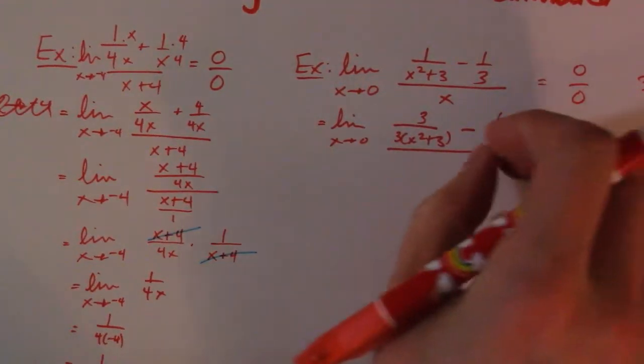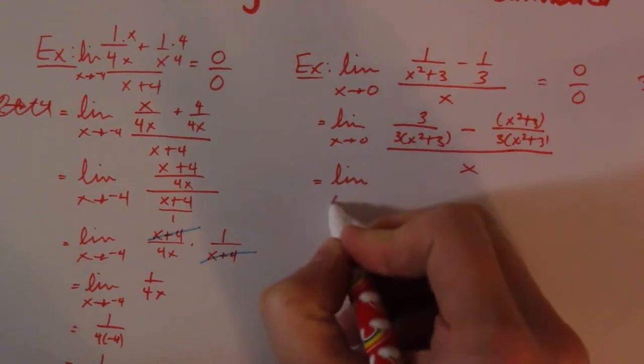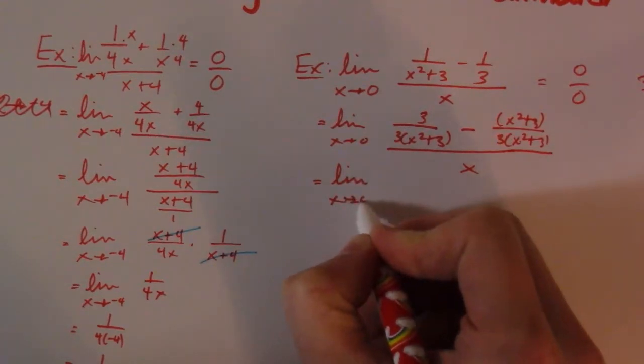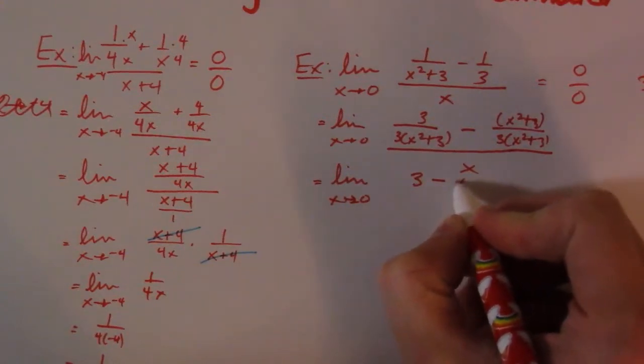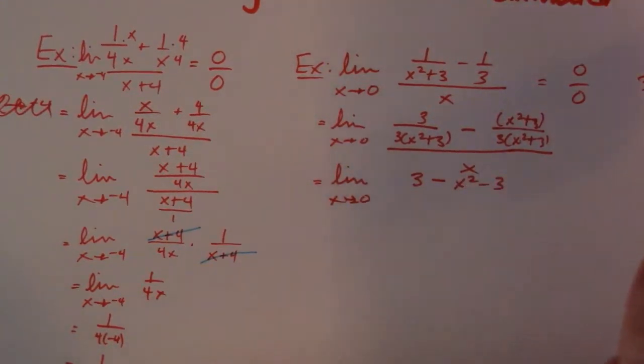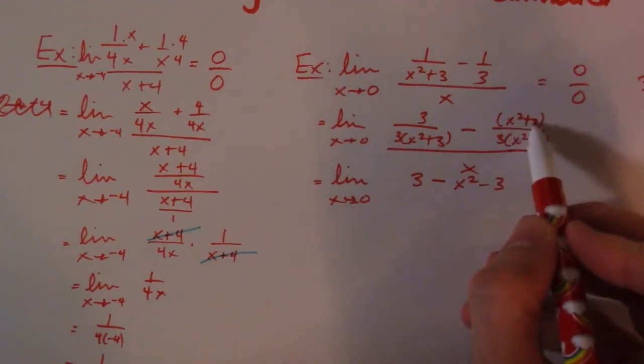So now I'm going to combine them. So then I have 3 minus x² minus 3. The mistake I often see students making is this minus sign applies to everything in the top here.